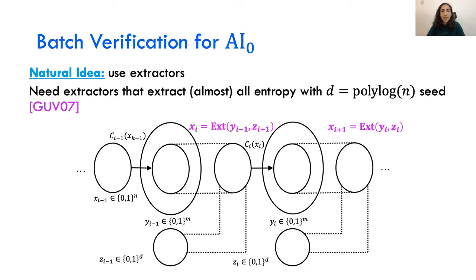A natural idea is to use extractors. Since each circuit image is of size 2^m and each circuit input is of size n, we need extractors that extract almost all entropy. We also cannot afford the seed C to be too long, as it will be translated to messages. Luckily, Goswami, Umans, and Vadhan showed a construction for extractors that extract almost all entropy with a seed length of only polylog(n).